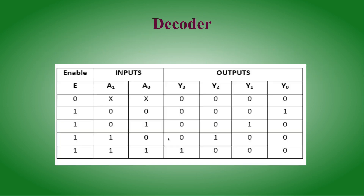When E equals zero, it is disabled and all outputs are zero. When enabled, input 00 activates Y0; input 01 activates Y1; input 10 (binary) activates Y2; and input 11 activates Y3. These are the output combinations for the two-to-four line decoder.